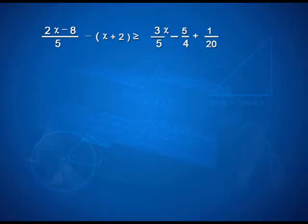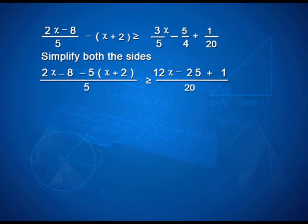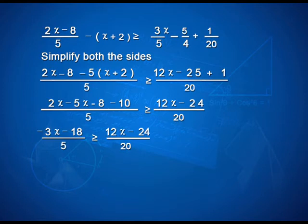Take up one more question: 2x minus 8 upon 5 minus x plus 2 is greater than or equal to 3x by 5 minus 5 by 4 plus 1 by 20. Simplifying both sides: the left hand side becomes 2x minus 8 minus 5 times (x plus 2) all over 5, and the right hand side with LCM 20 becomes 12x minus 25 plus 1 upon 20. Simplifying further: left hand side is 2x minus 5x minus 8 minus 10 over 5, and right hand side is 12x minus 24 over 20, giving minus 3x minus 18 upon 5 is greater than or equal to 12x minus 24 by 20.